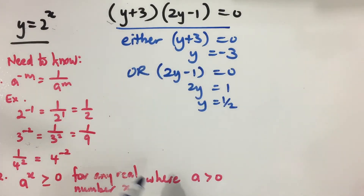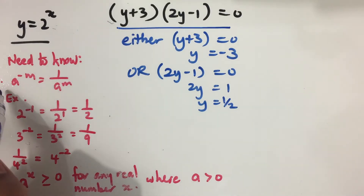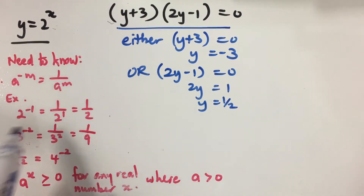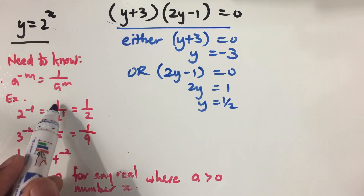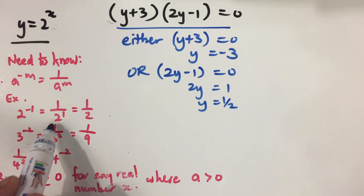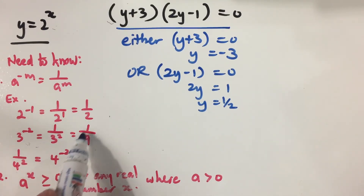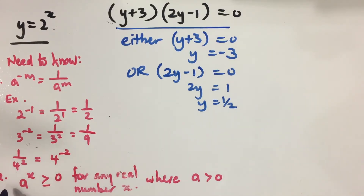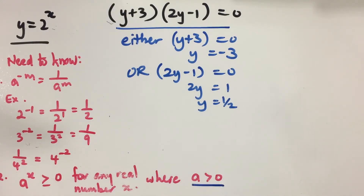Before continuing, we need two key facts. First, a to the power of negative m equals 1 over a to the power of m. For example, 2 to the power of minus 1 is 1 over 2, and 3 to the power of negative 2 is 1 over 9. Second, a to the power of x is always greater than or equal to 0 for any real number x, where a is a positive value.